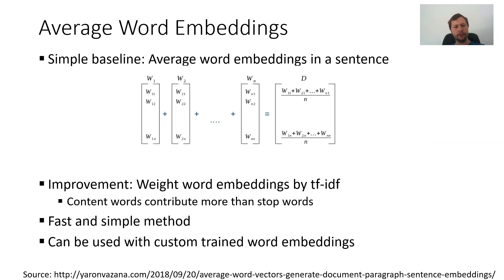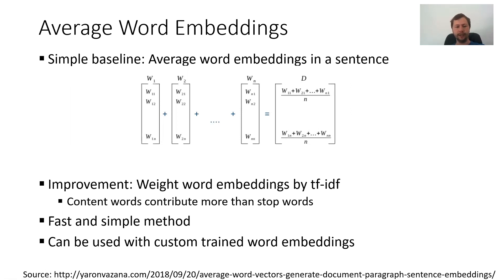The most simple baseline is average word embeddings in a sentence. You take your sentence, your document, you tokenize it, and then you take some word embeddings, for example from Word2Vec or from GloVe, you map every word to this word embedding, and then you compute the mean of all these word embeddings. An improvement compared to simply adding all the words is to weight the word embeddings by TF-IDF, so that content words contribute more than stop words.